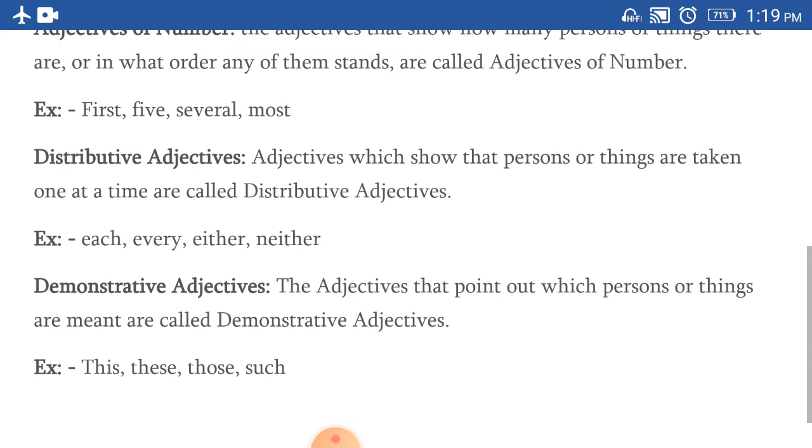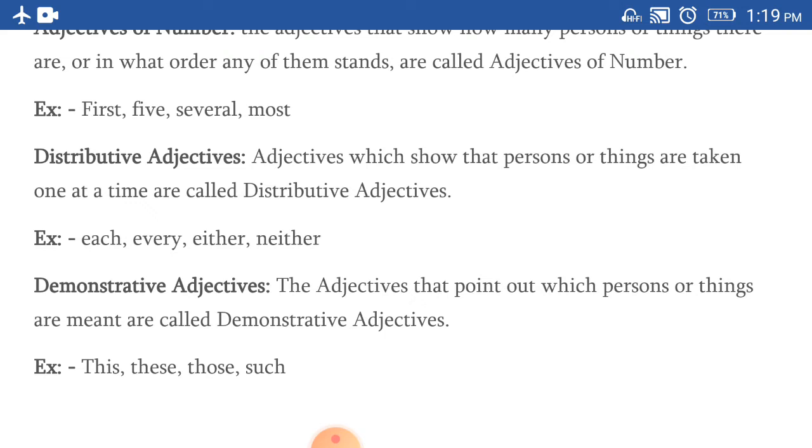Then comes distributive adjectives. Adjectives which show that persons or things are taken one at a time are called distributive adjectives. Examples: each, every, either, neither. These are distributive adjectives.